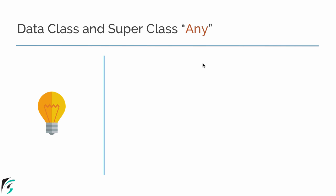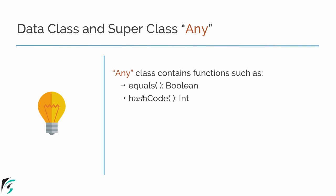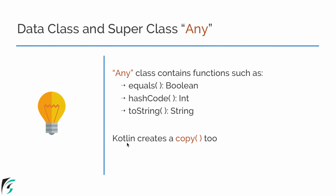Let us now proceed and check out one more concept in Kotlin: data classes. In the previous video we learned that by default every class has a superclass of any. This class provides methods such as equals, hashCode, and toString. All these methods are by default present in every class we define. When we use data classes, Kotlin provides a copy method, and data classes provide implementation of these mentioned methods.